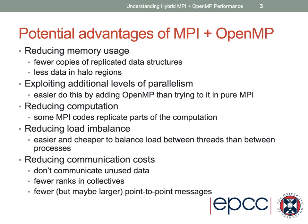We might also exploit additional levels of parallelism using OpenMP as well as MPI. In general, it's easier to add OpenMP than to do it all in pure MPI, where we might have to overcome severe restrictions imposed by the original application design. From a software engineering point of view, it might just be quicker and easier to add OpenMP rather than re-engineer the whole MPI code. We might also be able to reduce the amount of computation, because some MPI codes replicate parts of the computation for convenience.